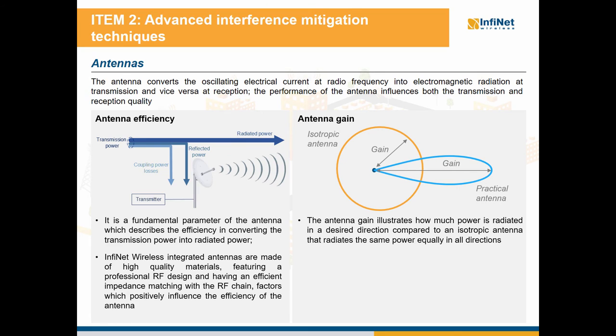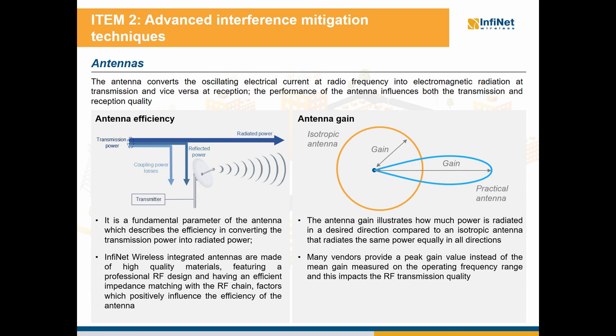Next, the antenna gain illustrates how much power is radiated in a desired direction compared to an isotropic antenna that radiates the same power equally in all directions, as we can see in the picture. Many vendors provide a peak gain value instead of the mean gain measured on the operating frequency range, and this impacts the RF transmission quality.